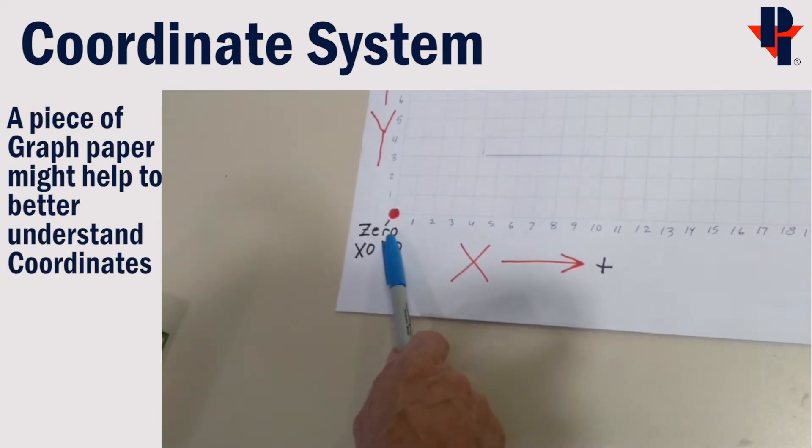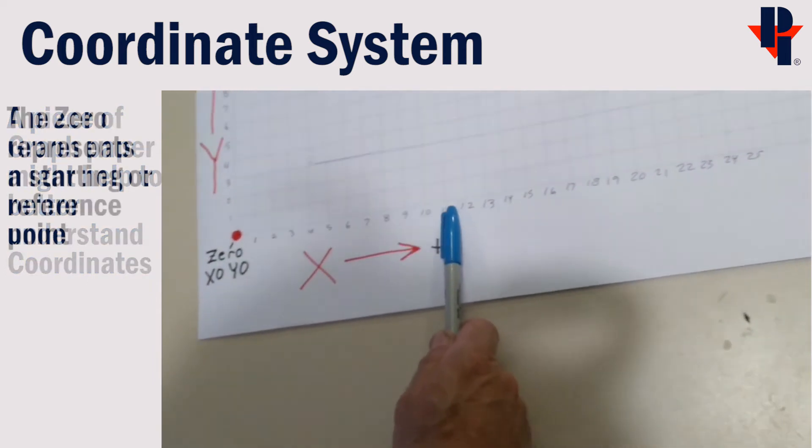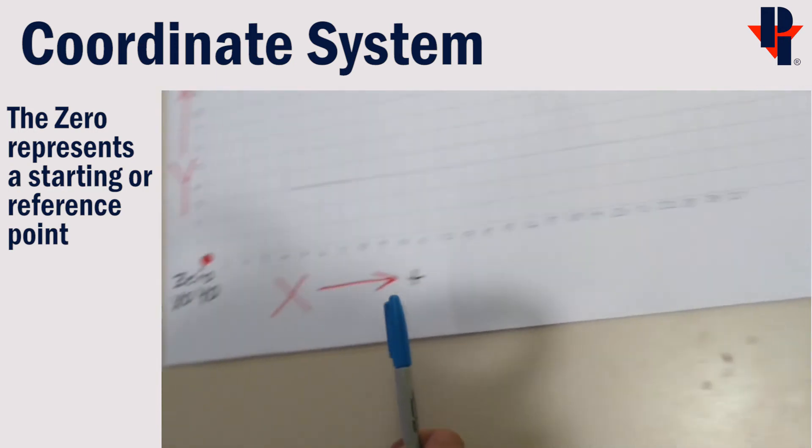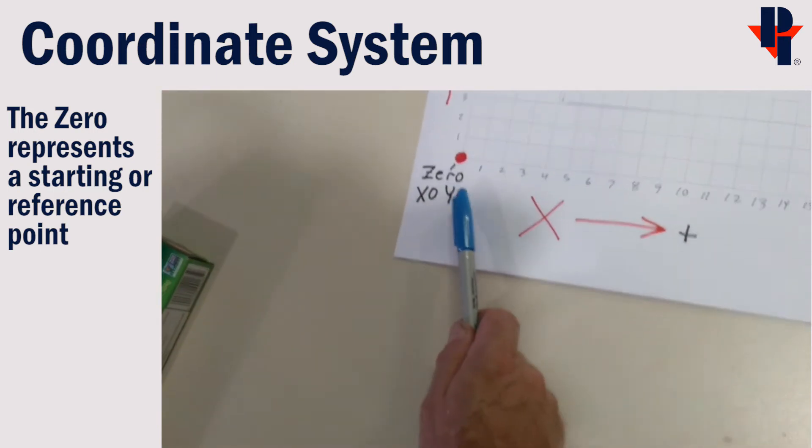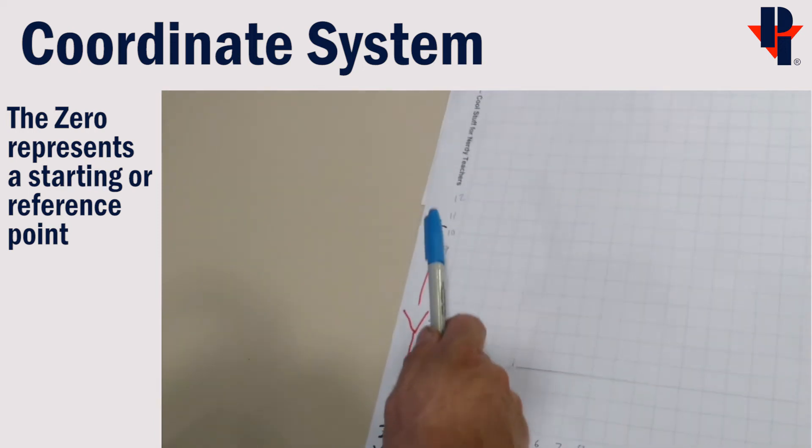I'll use a piece of graph paper for a better visual of coordinates. I've labeled positive increments in the x positive direction and also labeled y positive increments in the y direction.